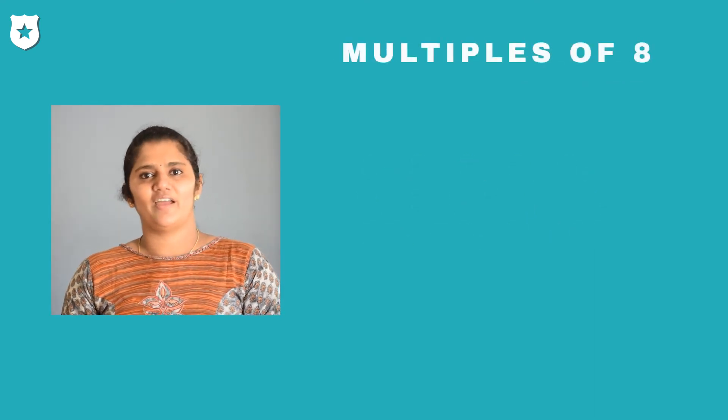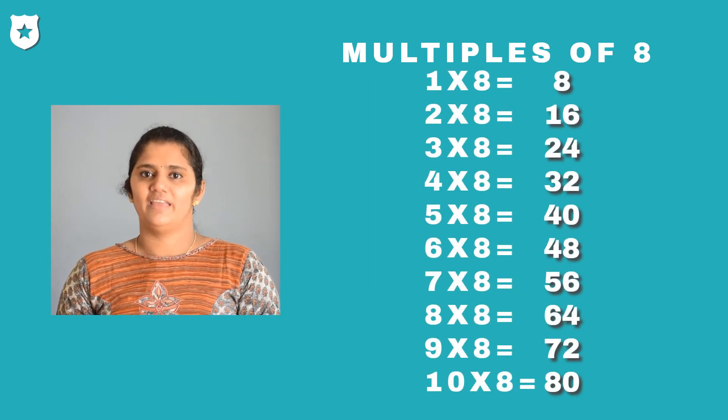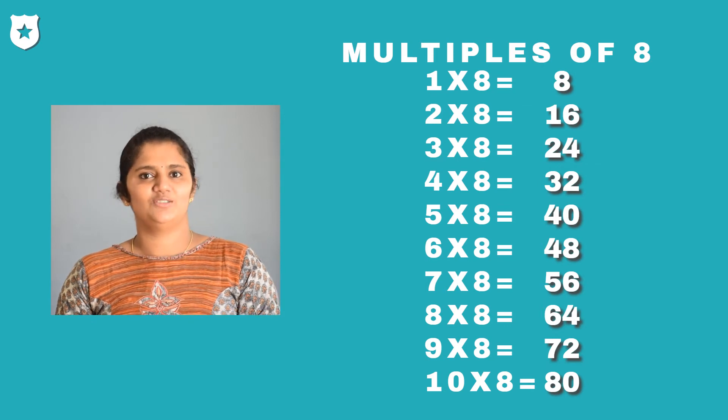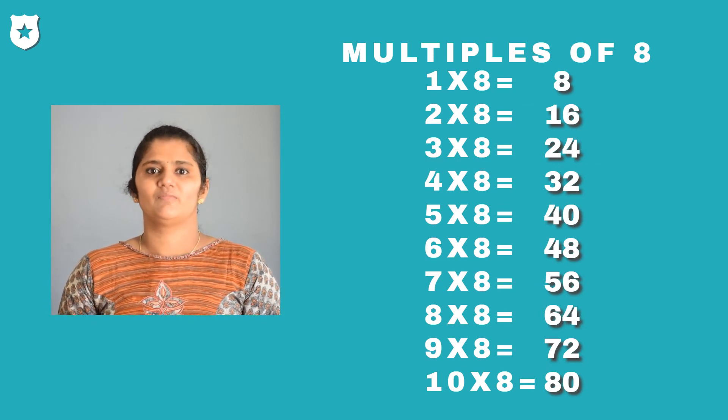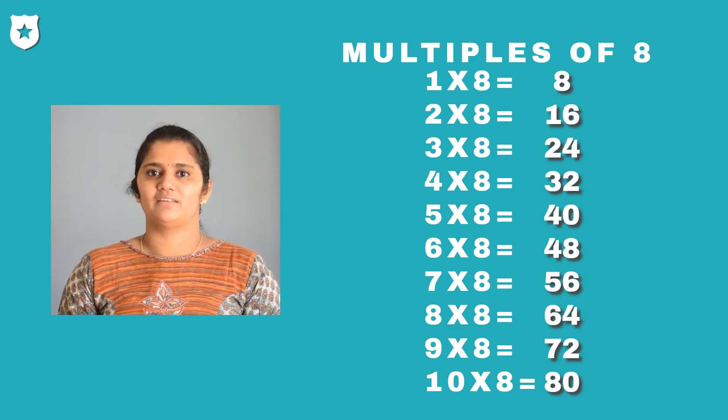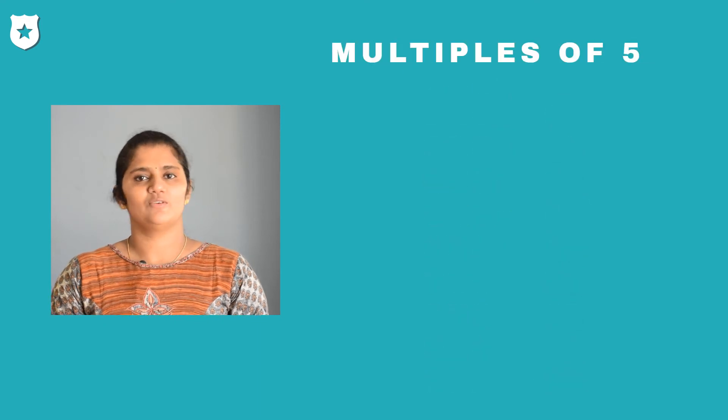Now let us find out the multiples of 8. Multiples of 8 are 8, 16, 24, 32, 40 and so on. We know multiples are infinite and factors are finite. Here are the multiples of 5.